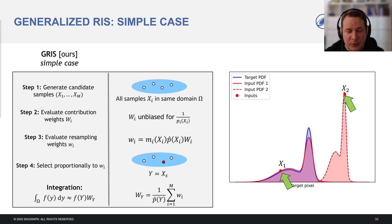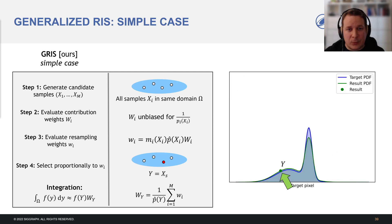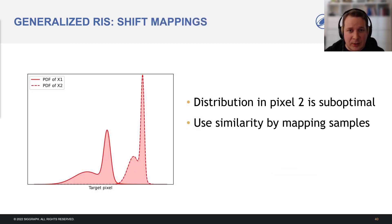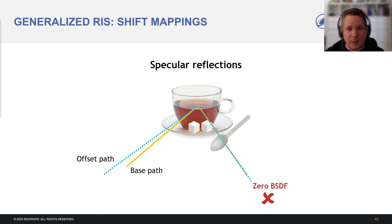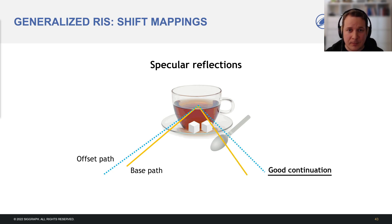Let's resample from two pixels that store one sample each. We don't expect much improvement due to the low overlap. We get an acceptable distribution, but we should have used a shift mapping to maximize the overlap. The target PDFs are quite similar, but we should shift the samples from the other pixel left. We should utilize our knowledge of the path spaces to maximize efficiency. The best shift is not the same for all samples. Not applying the transformation corresponds to blindly reusing vertices as they are, even when it doesn't make sense.